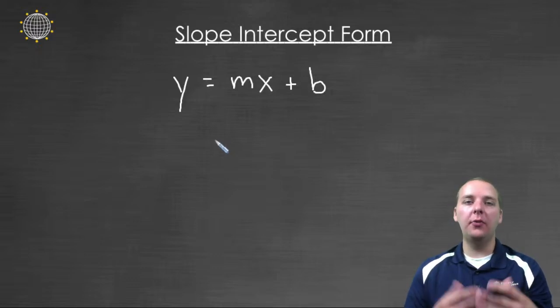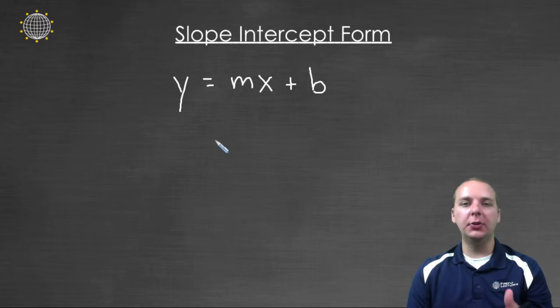Slope intercept form is a way of writing the equation of a line that has a lot of advantages to it. So here's what slope intercept form looks like. It looks like y equals mx plus b,